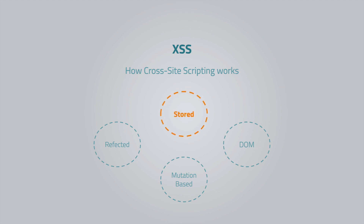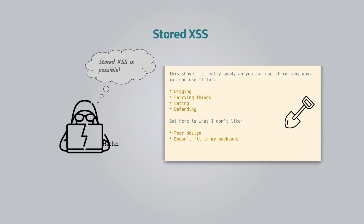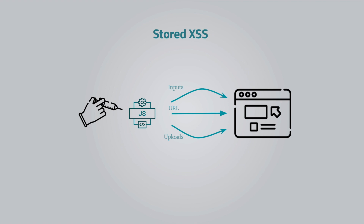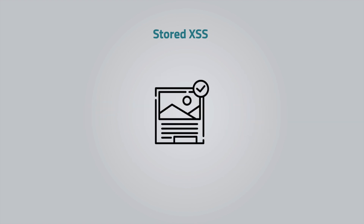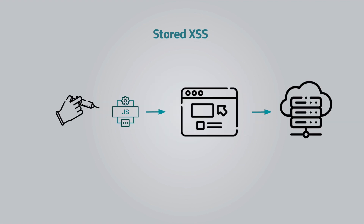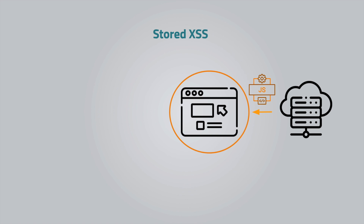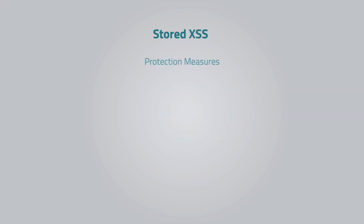Let's start with the first one — the stored cross-site scripting attack. The story we started with is a good example. Hackers find a way through forms and input fields that store data in the database and display it back to users, such as comments, posts, uploads, etc. Through this input, they send a script to the backend of the app. The script won't do anything there — its actual job is on the client. So whenever the website needs the value that the script was injected into, the script goes to the client and gets executed.